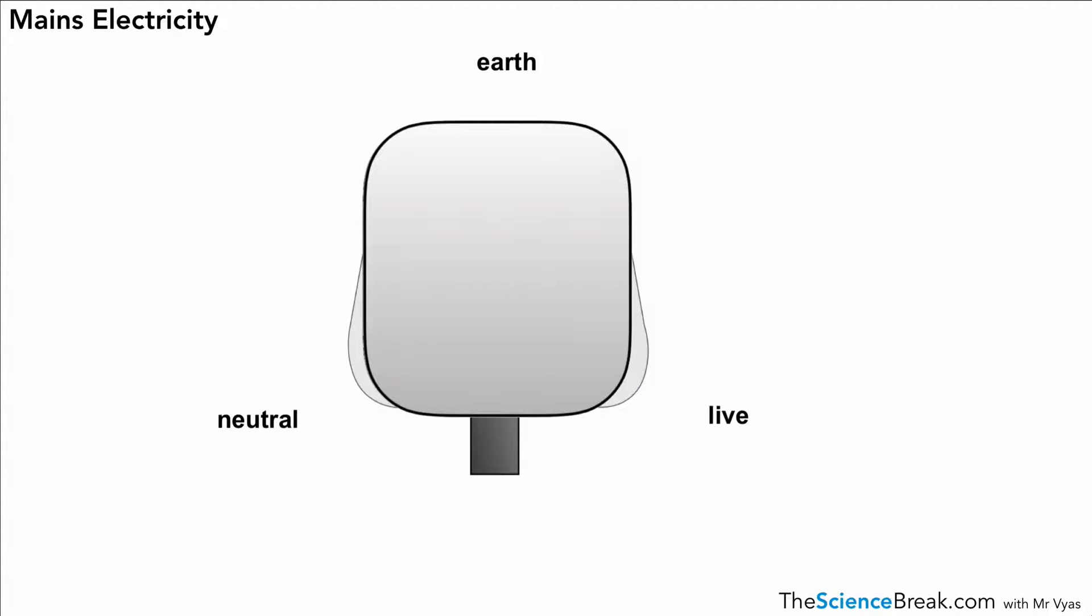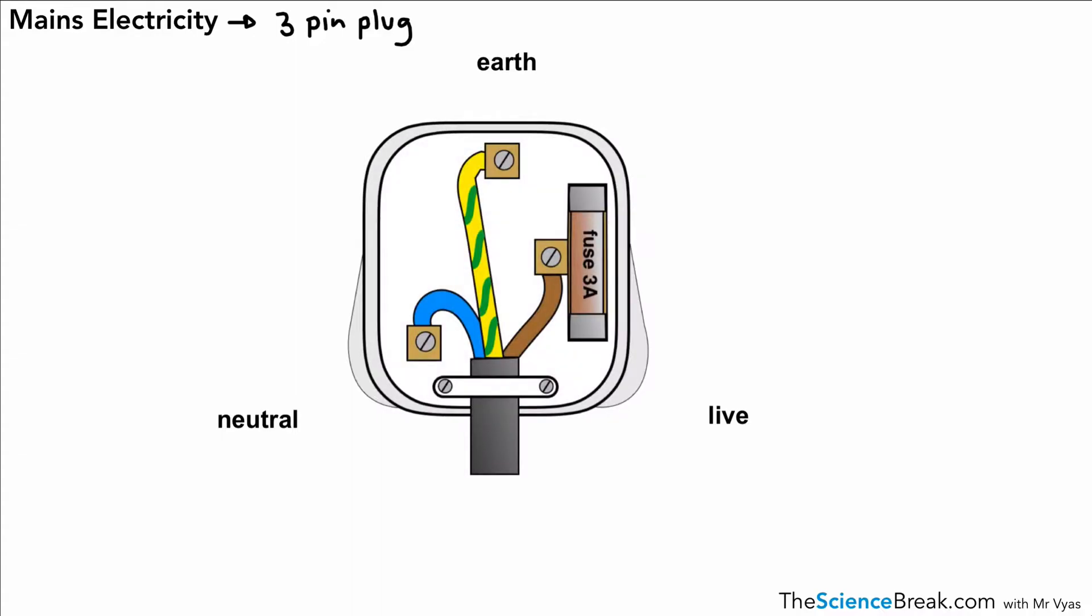What we're going to look at now is the idea of how we get that mains electricity into our appliances. And this is done via a 3-pin plug. So here's one on the screen there. If we take the back off it, you'll notice that it has 3 cables or 3 wires. We call this a 3-core cable because it has 3 wires coming from it. And as you can see, they are connected to different pins in the back of the plug.